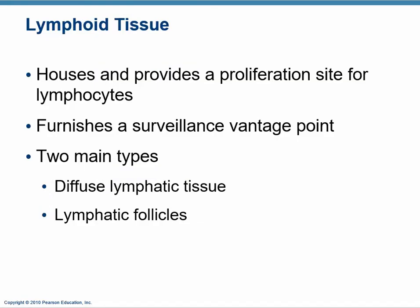Lymphoid tissue is found all over the body — either diffusely mixed in with other connective tissues, which we call diffuse lymphatic tissue, or in discrete little patches in places where we need surveillance, which we call lymphatic follicles. Lymphatic follicle is a much better term than the old word 'lymph nodules,' because lymph nodules sounds too much like lymph nodes. Lymphatic follicles are discrete little packages of reticular connective tissue that provide the place for lymphocytes to work.